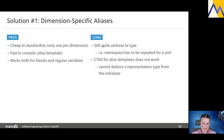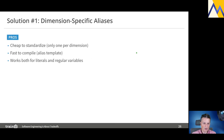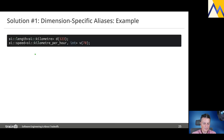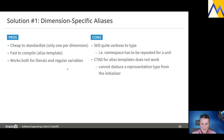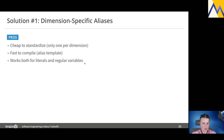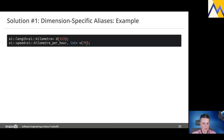The cons of solution one: it's still quite verbose to type, and the namespace has to be repeated for the unit — for example, si::length and si::kilometer. Class template argument deduction introduced in C++20 for alias templates will not work in this case, so the representation type has to be provided by hand and cannot be deduced from the initializer.